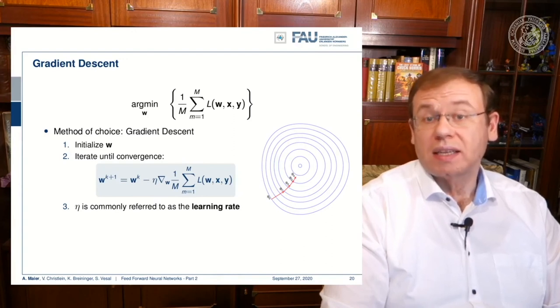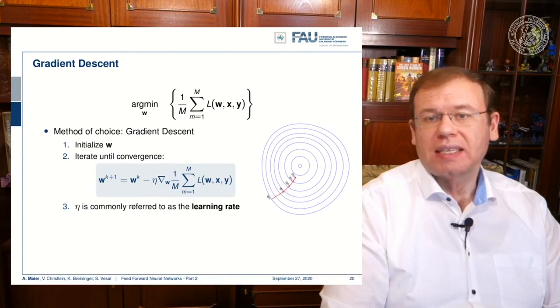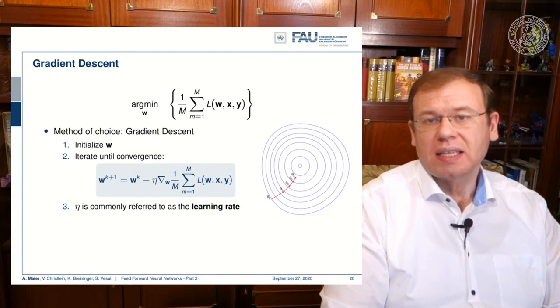Then in step two we iterate until convergence. So you compute the gradient with respect to w of the loss function. Then you need some learning rate eta. Eta essentially tells you how long the steps of the individual errors are. Then you follow this direction until you arrive at a minimum.